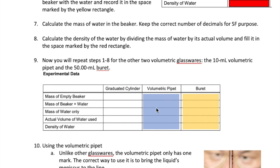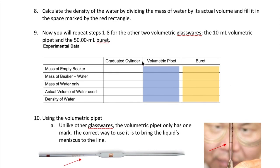For the second column, you're going to do the same experiment, but this time you're going to use a 10 milliliter volumetric pipette to get your sample of water. Pour out the water you have in the small beaker — that was for the graduated cylinder, so we're done with that. Once you pour the water out, dry that small beaker well with a napkin and then measure the mass of that beaker again and write it down.